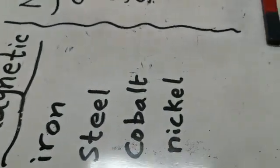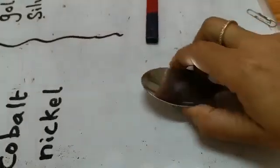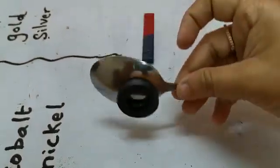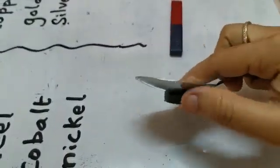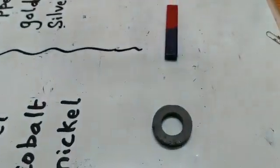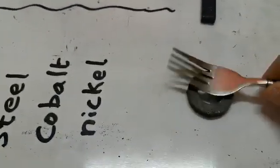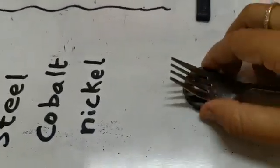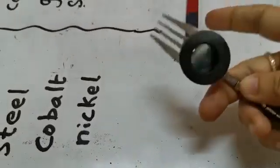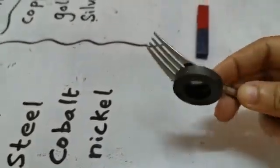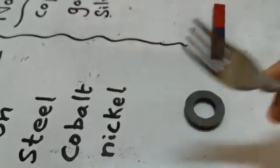Again, I am trying with a spoon. It is also sticking with the magnet — attracting. And another thing, a fork — we are using these things in the kitchen. See, the fork is also attracting. So this one also you can say is a magnetic material.